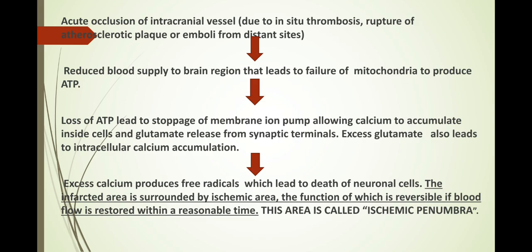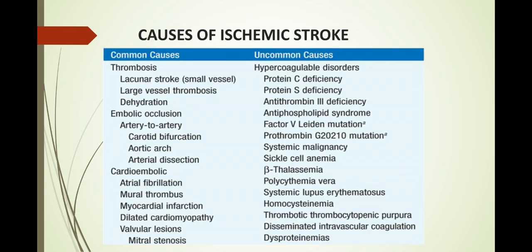To summarize the pathophysiology: a blood vessel in the brain is blocked by an embolus or thrombus, reducing blood flow. The mitochondria fail to produce ATP, the membrane ion pump fails, calcium accumulates, and glutamate is released from synaptic terminals — contributing to more calcium accumulation. This calcium produces free radicals causing neuronal cell death. The infarcted area is surrounded by an ischemic area called the ischemic penumbra, whose function can be restored if blood flow is restored in time.